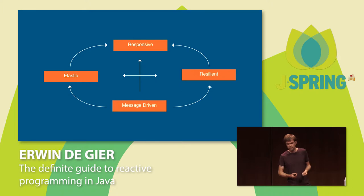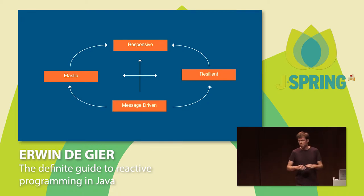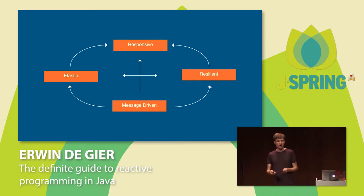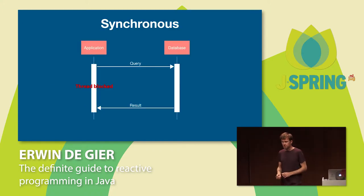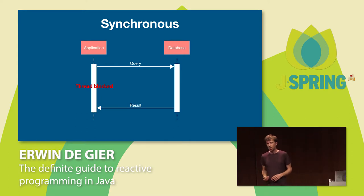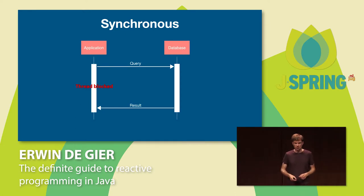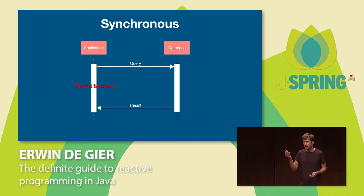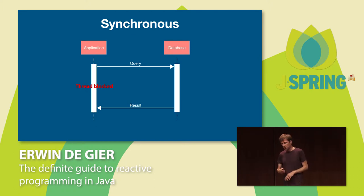The way you could achieve this is using a message-driven application. This is a reactive system. If we go inside our application, we talk about reactive programming. Very simple example: if you have a traditional Java application with a synchronous database API — maybe JPA or JDBC — then you do a query to a database and maybe get a result in 200 milliseconds. But between your query and the results from the database, your thread is blocked and cannot be used for anything else.